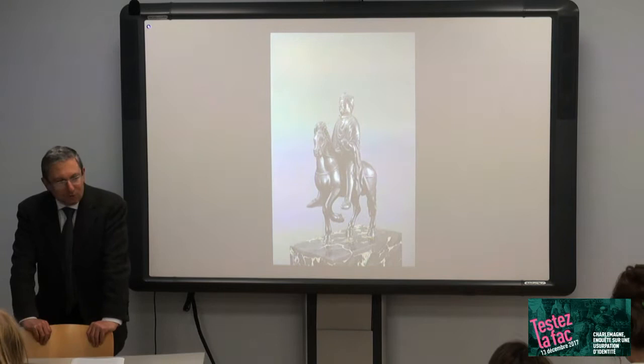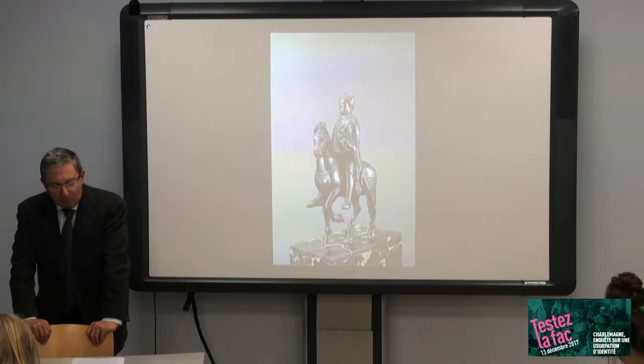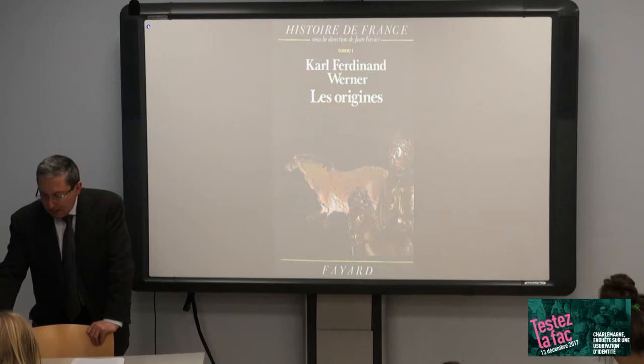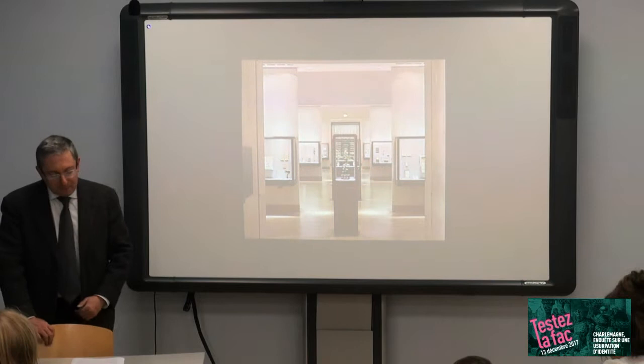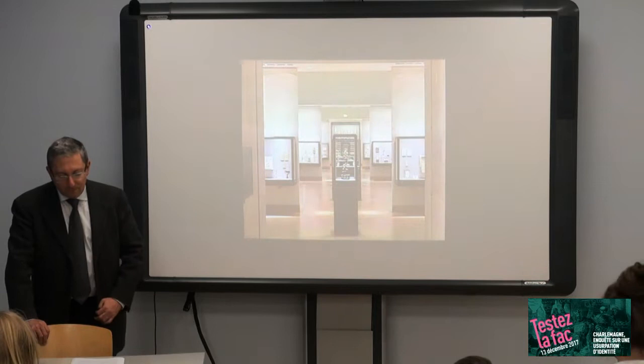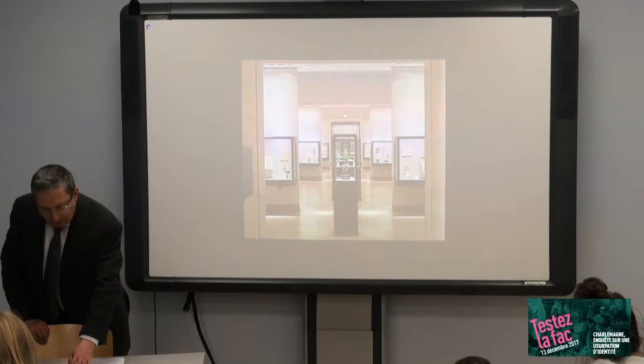Enquête sur une usurpation d'identité. L'objet est connu et particulièrement bien mis en valeur. Connu car il orne des couvertures de livres, il illustre des manuels scolaires depuis que ces derniers sont illustrés, comme ici le célèbre Malé Isaac de 1932. Particulièrement bien mis en valeur, car si vous allez au département des objets d'art du musée du Louvre, il ne peut pas vous échapper. Il est dans la première vitrine, à la place d'honneur, lorsque l'on pénètre dans l'aile Richelieu.